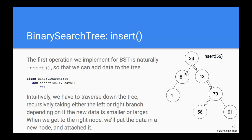Given a piece of data — say 56 — we see 23, so we go down the right side. We had 42; 56 is still bigger, so we go right again. We hit 79; 56 is smaller than 79, so we go left. Since 79 has no left child, we've found the insertion point. We create a new node containing 56 and attach it as the left child of the node containing 79.